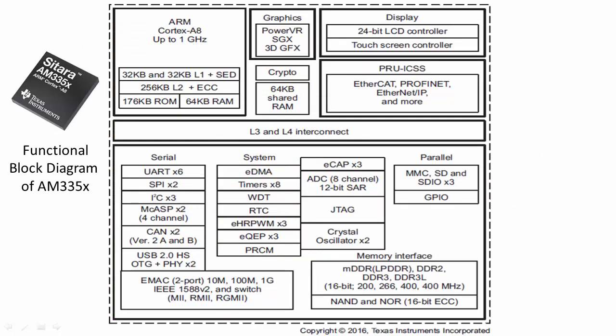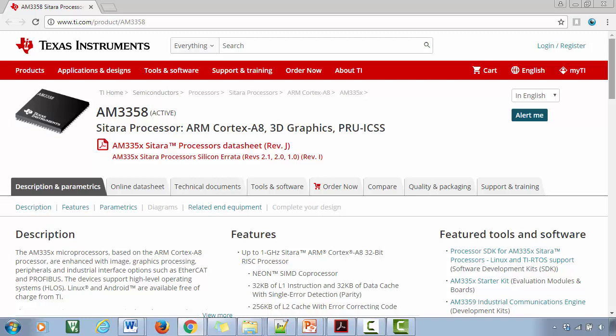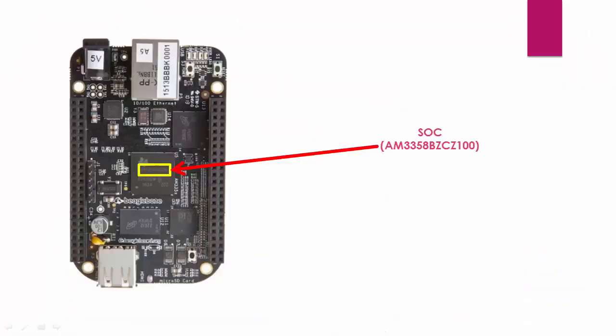Here is one such example — the AM335x SoC designed by Texas Instruments. This diagram shows the functional blocks inside this System on Chip. You can access all documents, application notes, sample codes, and drivers related to this SoC and its peripherals by visiting the TI website. The AM335x is the SoC used in our BeagleBone Black Revision C hardware.